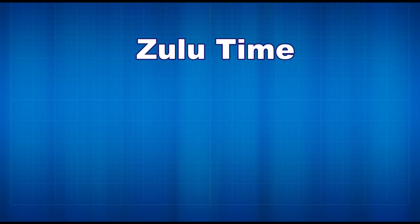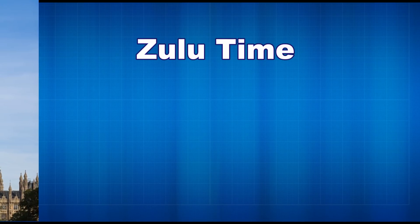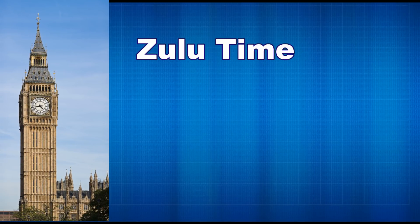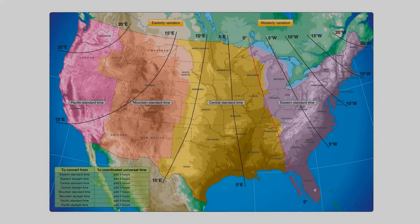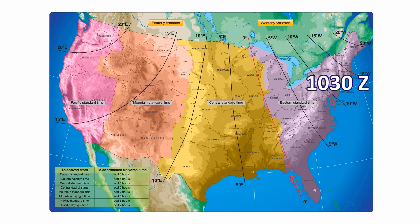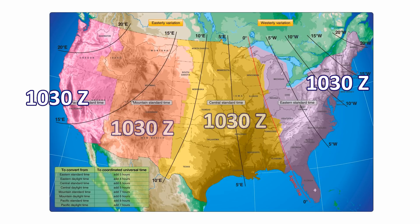When pilots use Zulu time, it's as if we all have reset our clocks to the current time in London. This means that every pilot, regardless of the time zone, is using the same time reference. If you're in Boston and the time is 10:30 Zulu and you call your buddy in California, he'll tell you it's also 10:30 Zulu out there. In fact, when it's 10:30 Zulu in Boston, it's 10:30 Zulu at every other point on Earth. If you hear ATC mention 10:30 Zulu to someone else on the radio, it doesn't matter what time zone that pilot's in — it's 10:30 Zulu everywhere.